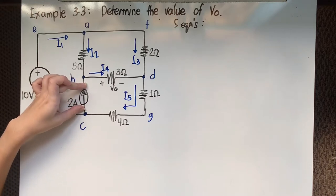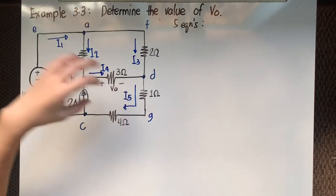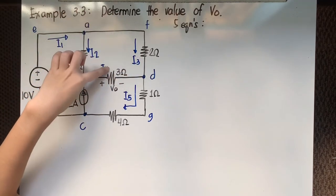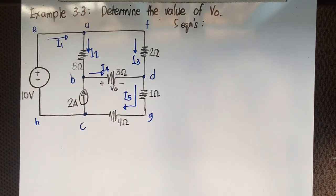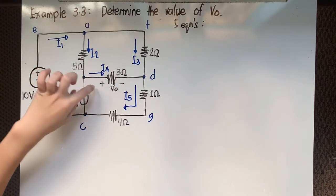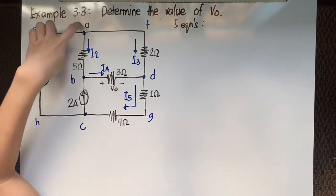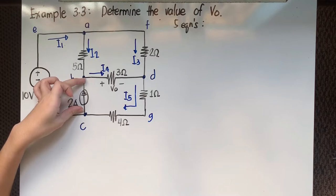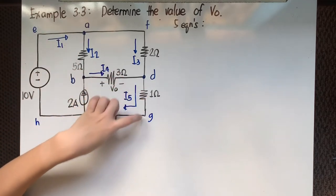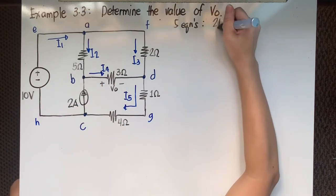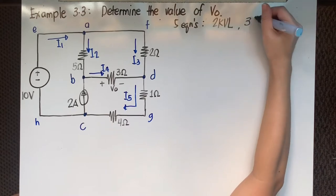We cannot do KVL on those two loops, but we can on the third. As a solution, we avoid the problematic branch and combine the two loops into one larger outer loop. That gives us 2 usable KVL equations. Since we need 5 equations total, we still need 3 more, which we will take from KCL.